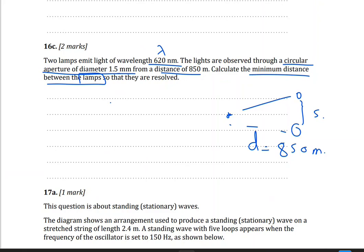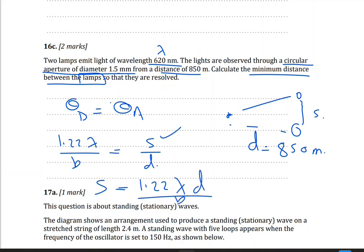So we said just resolved is if theta D equals to theta A. Theta D is the angle of first diffraction minimum, this equals 1.22 lambda for circular aperture divided by B, and this will equal S divided by D. I'll just substitute, I need S. So rearrange this equation, so S will equal 1.22 times lambda times D divided by B.